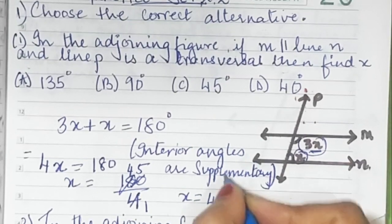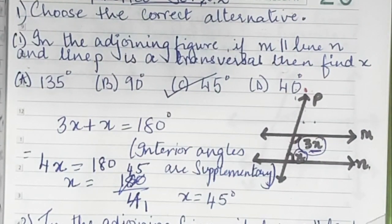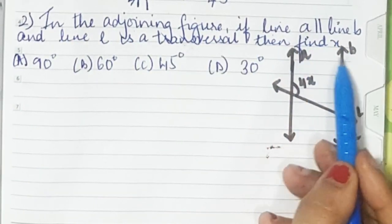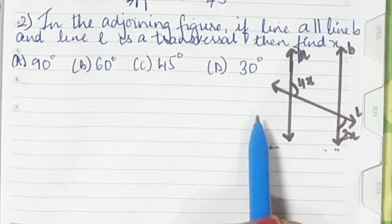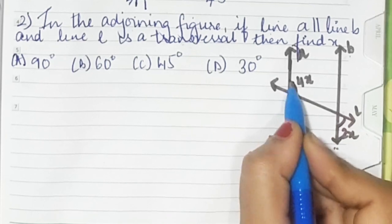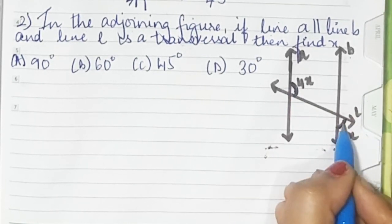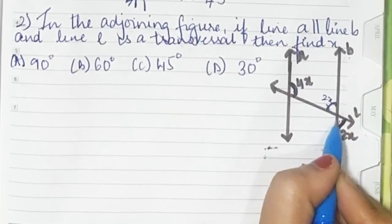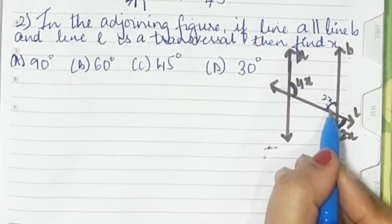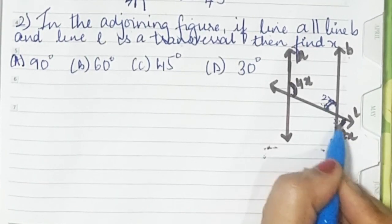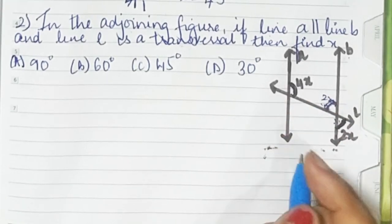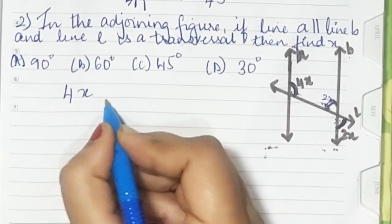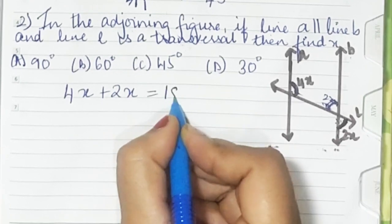So c is the correct option. The second sum says: in the adjoining figure, if line a is parallel to line b and line l is the transversal, find x. Here we have 4x, and here 2x. This will also be 2x because it's vertically opposite. Vertically opposite angles are equal. So these two become interior angles.